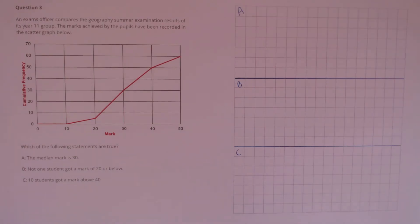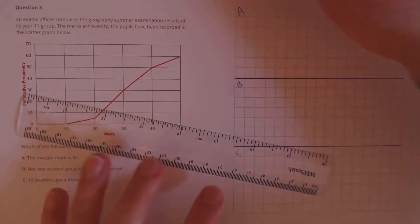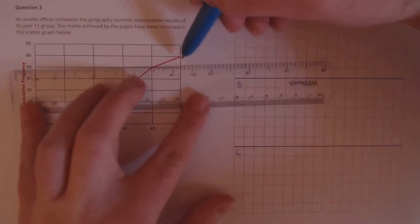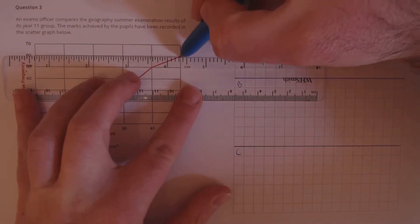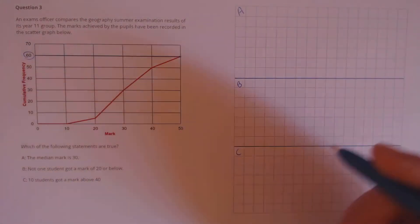Question 3. An exams officer compares the geography summary examination results of its year 11 group. The marks achieved by the pupils have been recorded in the scatter graph below. Which of the following statements are true? A: the median mark is 30. To calculate the median, we first need to know the total, and that's the highest point of the graph here. So the total number was 60 students.